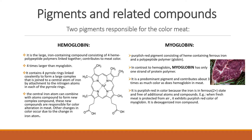Hemoglobin contains four pyrrole rings linked covalently to form a large complex that is joined to a central atom of iron by attachment to the nitrogen atoms in each of the pyrrole rings. The central iron atom can combine with other atoms or compounds to form new complex compounds. These new compounds are responsible for color alteration in meat.